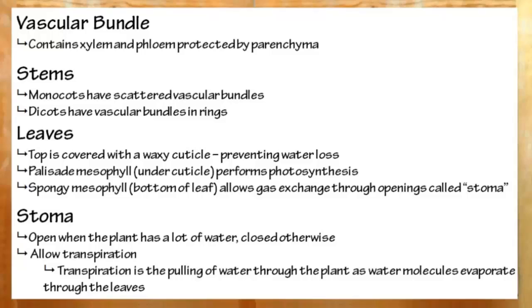On the bottom, we have spongy mesophyll, which allows oxygen and carbon dioxide in and out through openings called the stoma. The stoma have guard cells. When there's lots of water, the guard cells are open. When there's little water in the plant, the guard cells are shut.